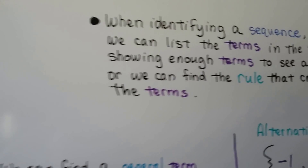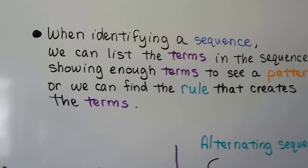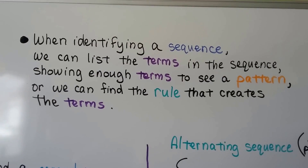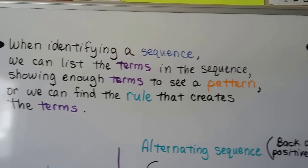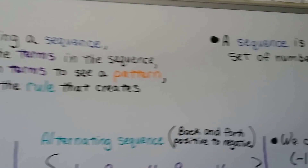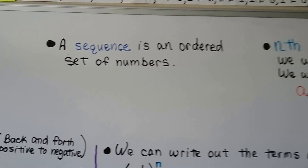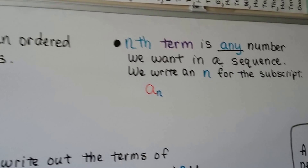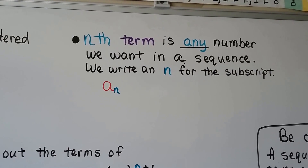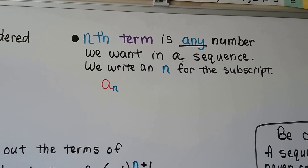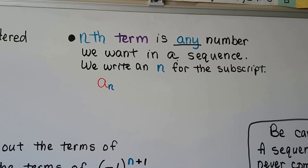When identifying a sequence, we can list the terms in the sequence, showing enough terms to see a pattern, or we can find the rule that creates the terms. Remember, a sequence is an ordered set of numbers, and the nth term is any number we want in a sequence. We write an n for the subscript, so we have a sub n.